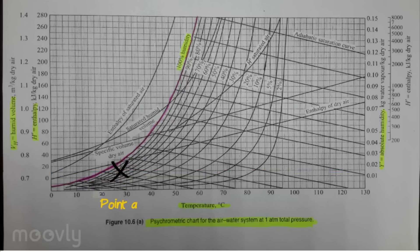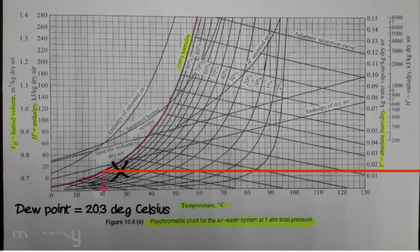Then we determine dew point temperature by moving along the constant humidity line horizontally from point A to the 100% humidity line, and then moving vertically down to the temperature axis. Dew point temperature is around 20.3 degrees Celsius.